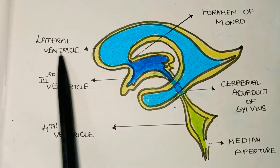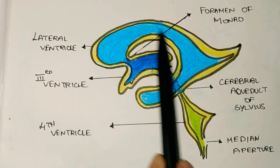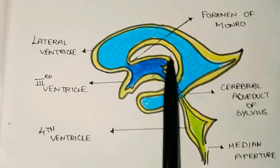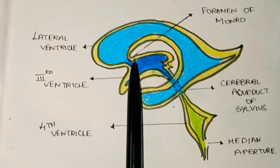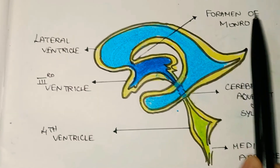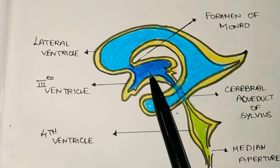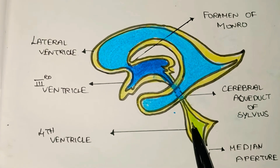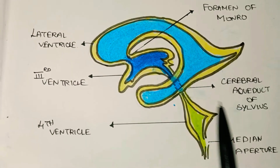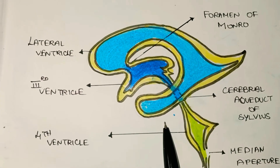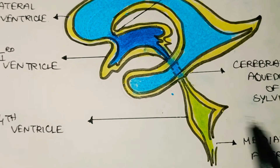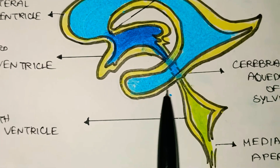The lateral ventricle is connected to the 3rd ventricle by the foramen of Munro. And then the 3rd ventricle is connected to the 4th ventricle. In this video, we will see the 4th ventricle in detail.